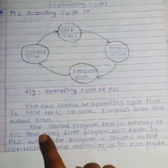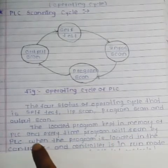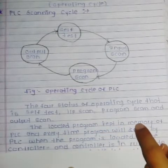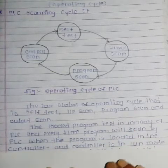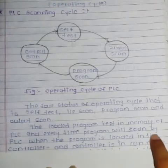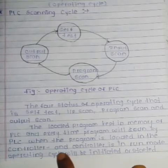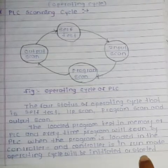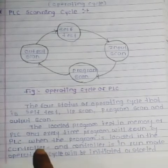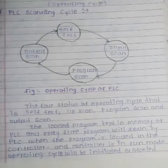The loaded program is kept in the memory of the PLC, and every time the program will be scanned by the PLC. When the program is loaded in the controller, the controller is in run mode and the operating cycle starts.